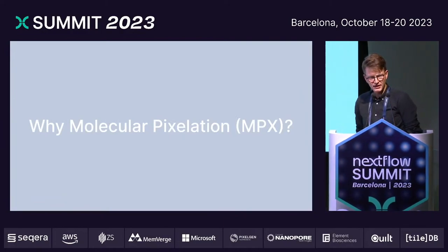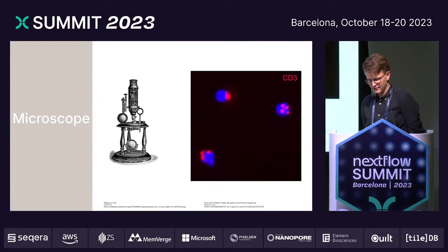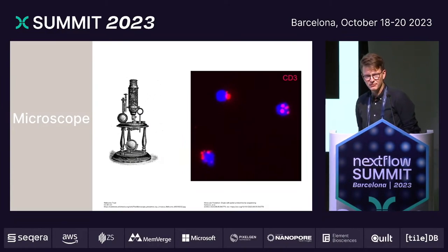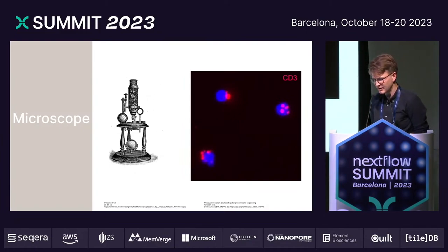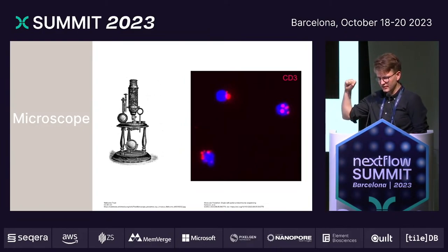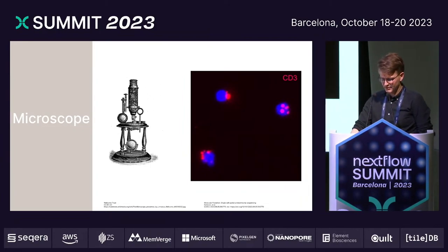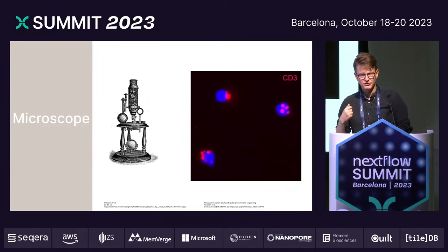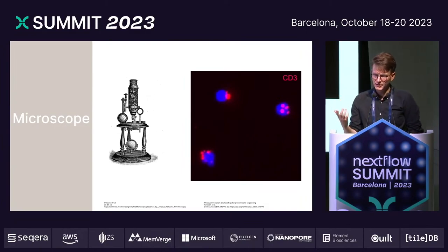Why use molecular pixelation, or MPX, to do this? Back to the microscope — nowadays you can take these wonderful fluorescent microscopy images that people in the 18th century couldn't dream of. We see T cells where a protein called CD3 has formed poles or clusters on the cell surface. But microscopy has important limitations in terms of resolution and multiplexing — for example, the number of antibodies you can assay at the same time.